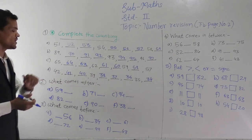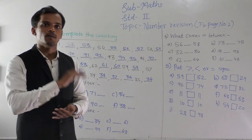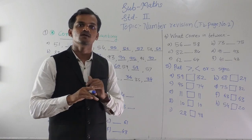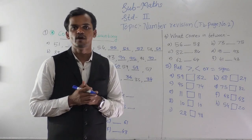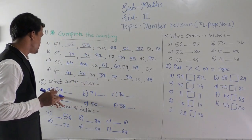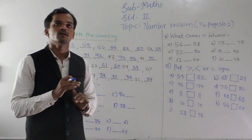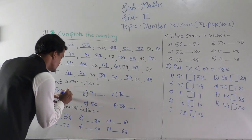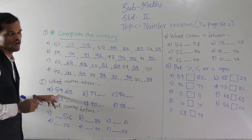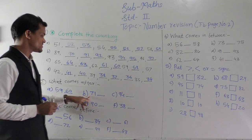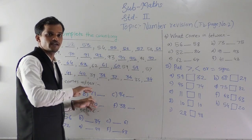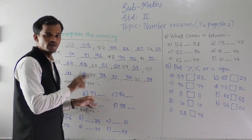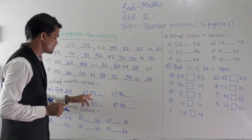Then, what comes after? In our previous standard we have learned after number, before number, and between number. After number means the number that comes just after the given number. That is 59 — after 59 is 60, so write 60 here. 60 is the after number of 59. Then 71 — when we add one to 71, we get 72. So 72 is the after number of 71.